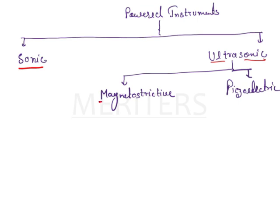In the ultrasonic category, we have two units: one is the magnetostrictive type and then we have the piezoelectric unit. Now, let's see a little bit about sonic instruments. In periodontology, we use sonic scaler tips. These are generally large in diameter and universal in design — they are adapted to all tooth surfaces.